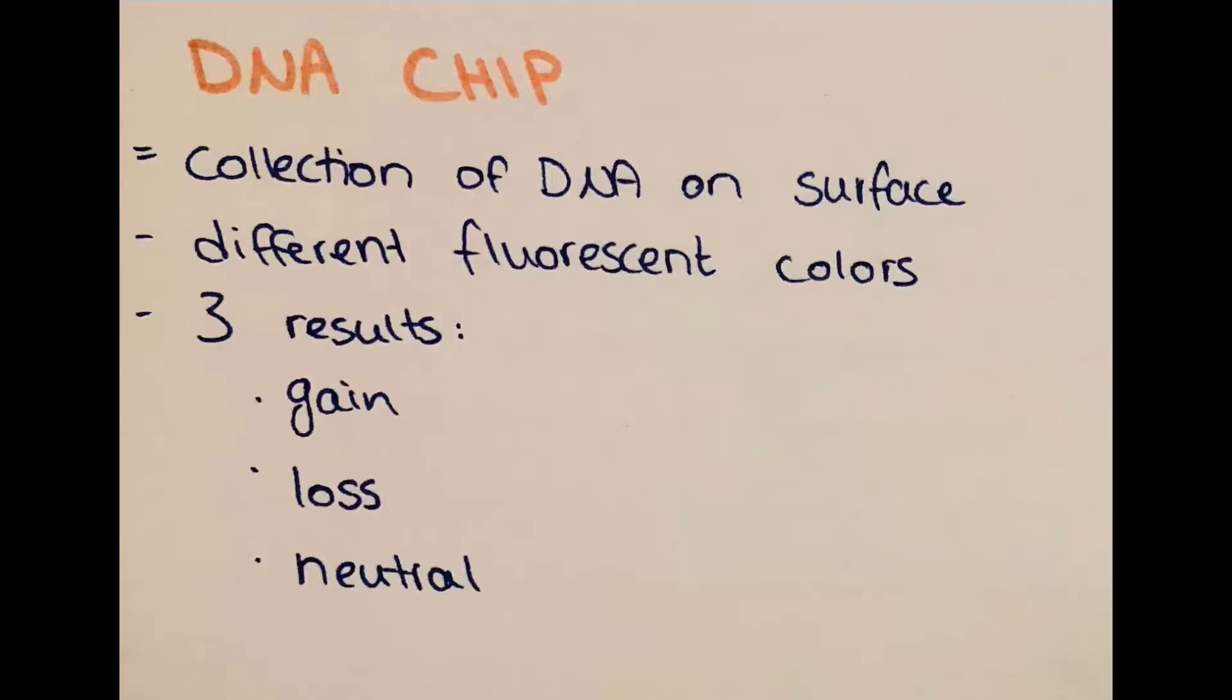Let's talk more about the DNA chip which is basically the practical use of this comparative genome hybridization. Here the collection of DNA spots are fixed on a solid surface, in this case the chip, and this is used for the investigation of large numbers of genes simultaneously. Different DNA sequences are labeled with different fluorescent colors like green and red, and the DNA probe from the patient will bind competitively to those.